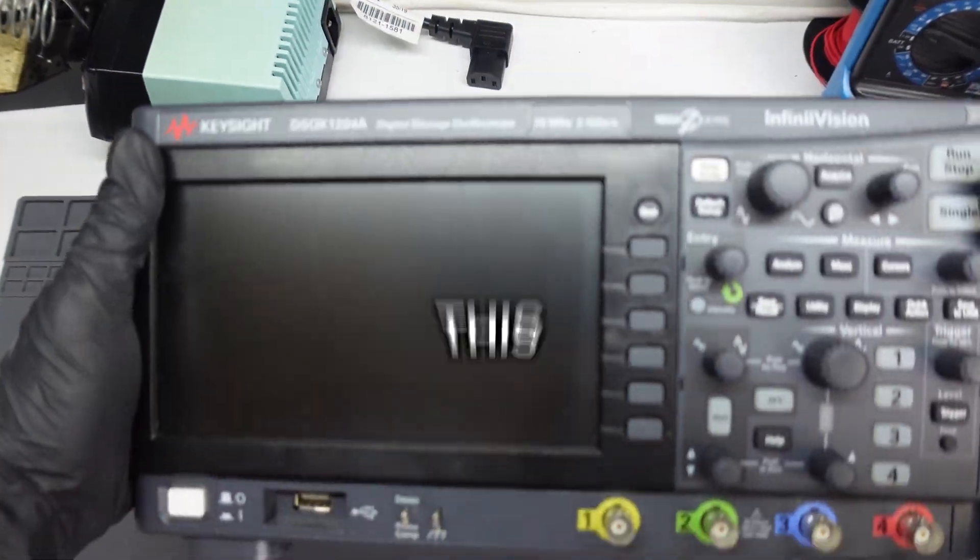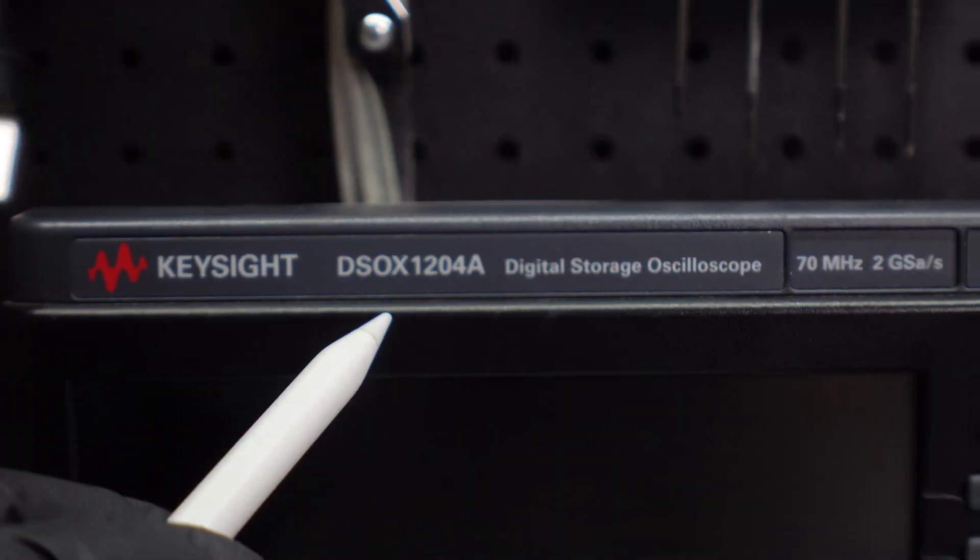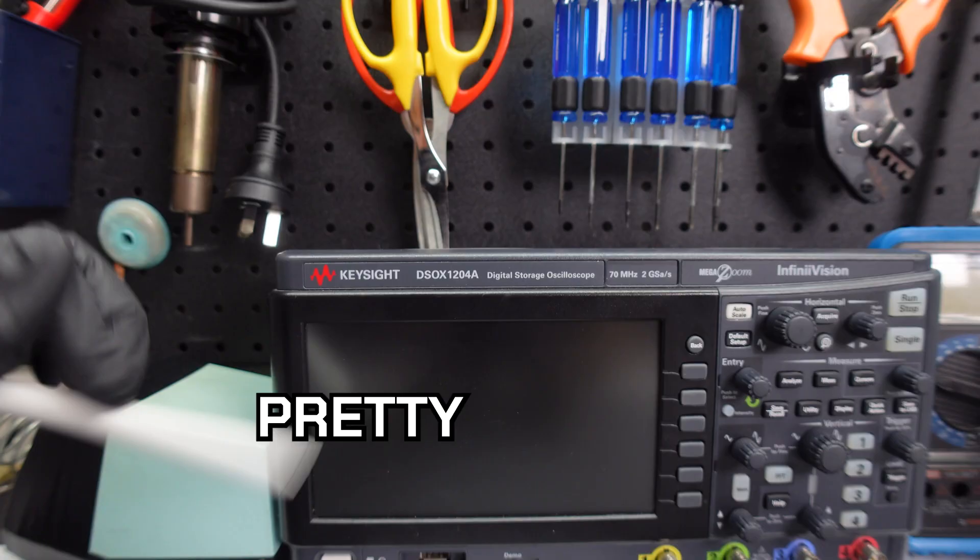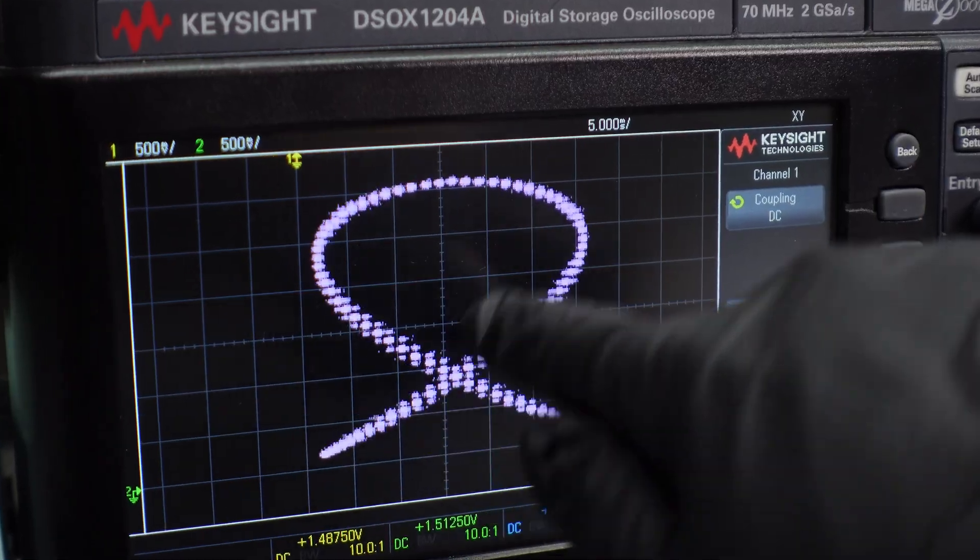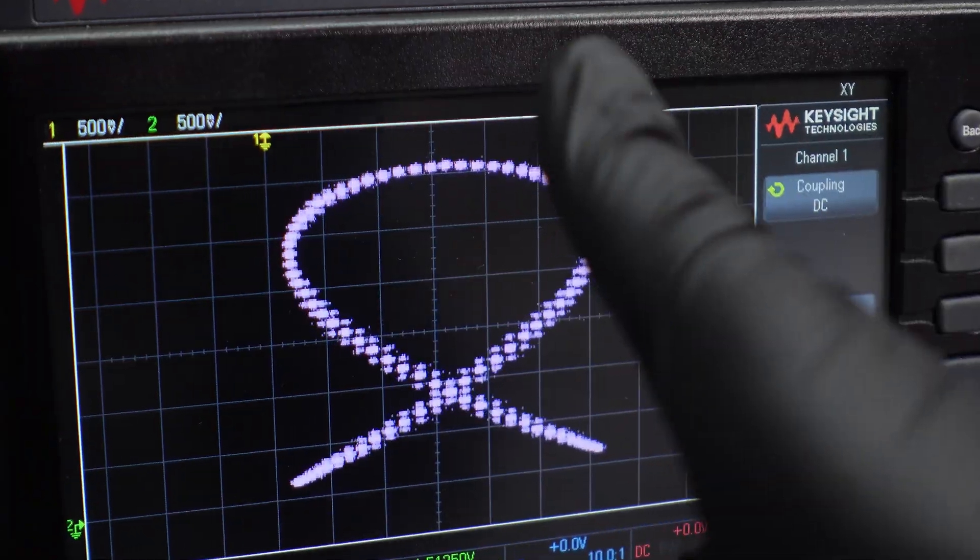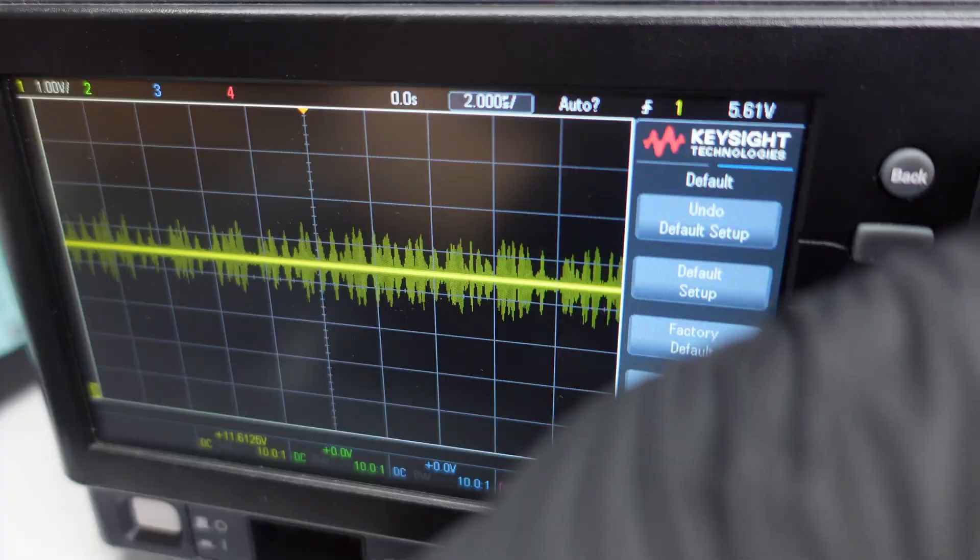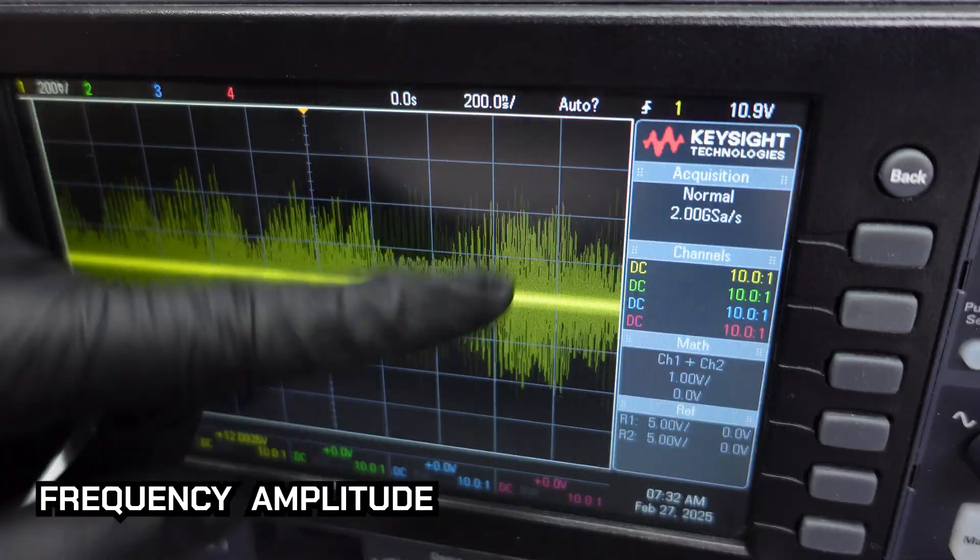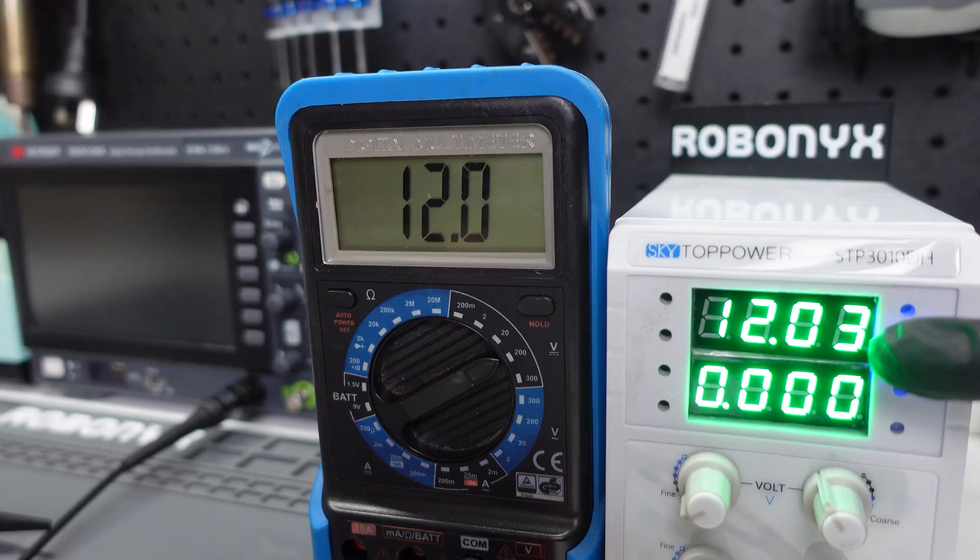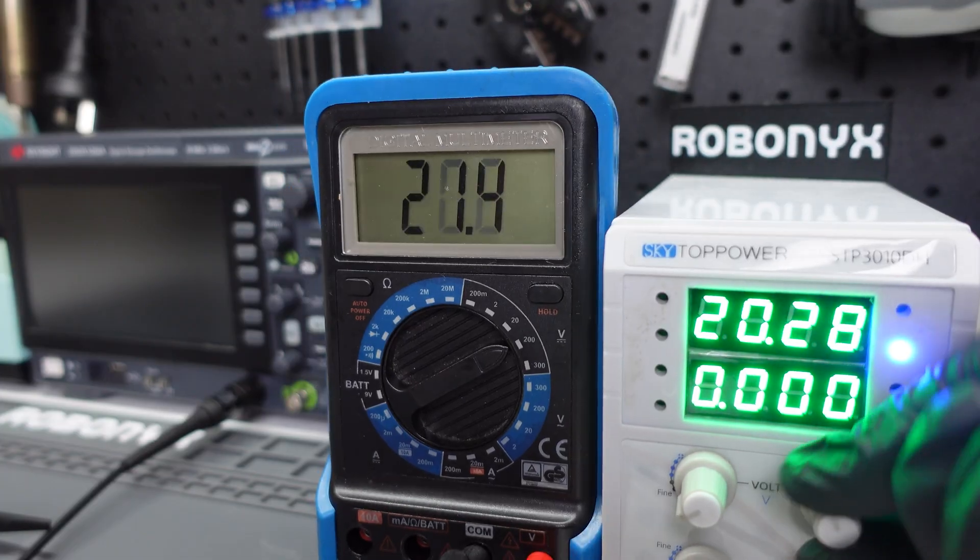Alright, let's go. First, this is an oscilloscope, a DSO-X1204A by Keysight, and it's a pretty standard scope. It's basically an electronic graphing machine. Instead of measuring voltage with a simple number like a multimeter, it plots the voltage over time, which lets you see things like frequency, amplitude, noise, distortion, and glitches. Stuff that a multimeter would completely miss.